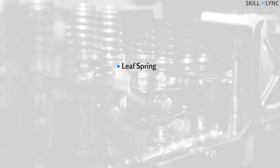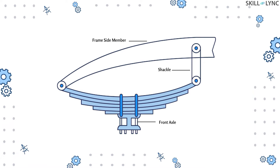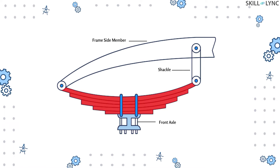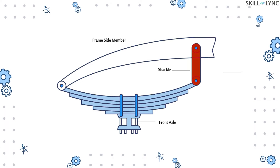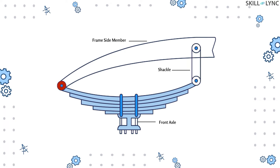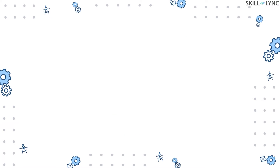Steel springs are classified into leaf spring, helper spring, coil spring, and torsion bar. Let's start by talking about the leaf spring suspension. This image represents the construction of the leaf spring. The spring has many leaves of increasing length made out of steel plates. At one end a shackle pin is used to connect the spring eye to the frame, whereas the other end is mounted onto the frame with a simple pin. The center portion is attached to the axle with the help of a U-bolt.